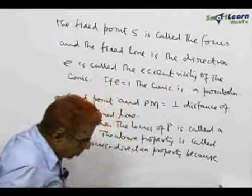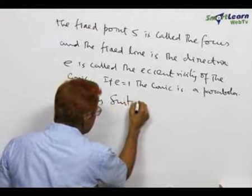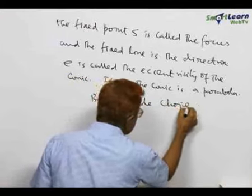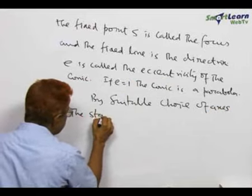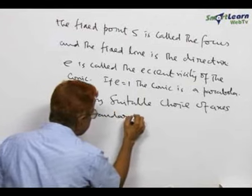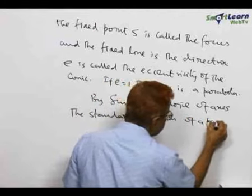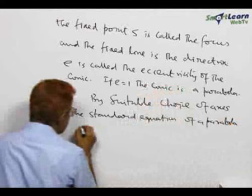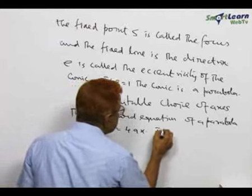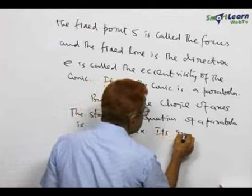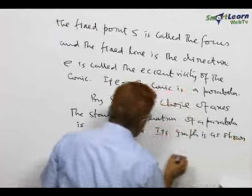By suitable choice of axis, the standard equation of a parabola is y square is equal to 4ax. Its graph is as shown in the figure.